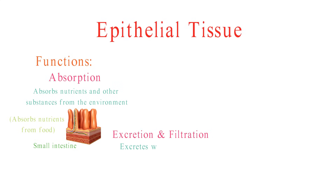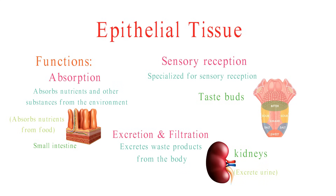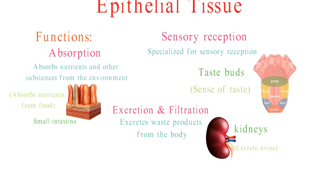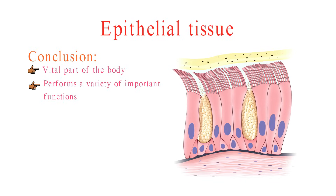Epithelial tissue excretes waste products from the body. For example, the kidneys excrete urine, which contains waste products from the blood. Some epithelial tissues are specialized for sensory reception — for example, the taste buds are made up of epithelial tissue and are responsible for the sense of taste. Epithelial tissue is a vital part of the body, performing important functions including protection, secretion, absorption, excretion, filtration, and sensory reception. Its type and location vary depending on its function.